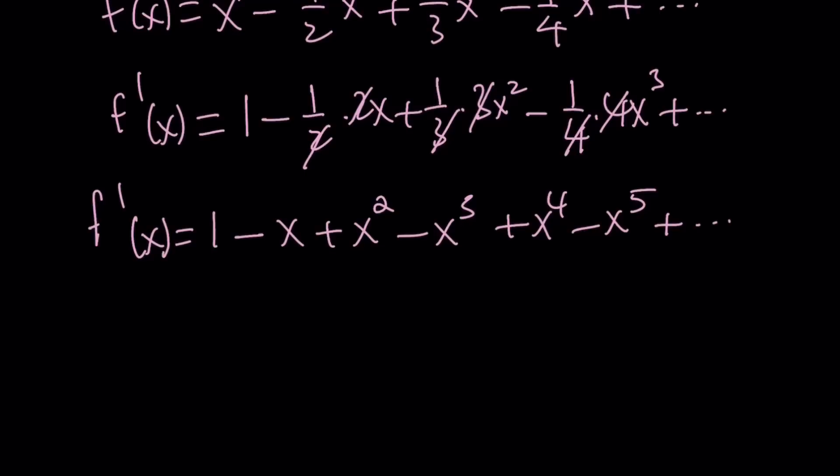So how do you evaluate this sum? First of all, suppose that x is between negative 1 and 1. In that case, you get an infinite geometric series. We can write this as 1 plus x squared plus x to the fourth plus x to the sixth and so on. And then from this, subtract the terms that have an odd power like x, x cubed, and x to the fifth.